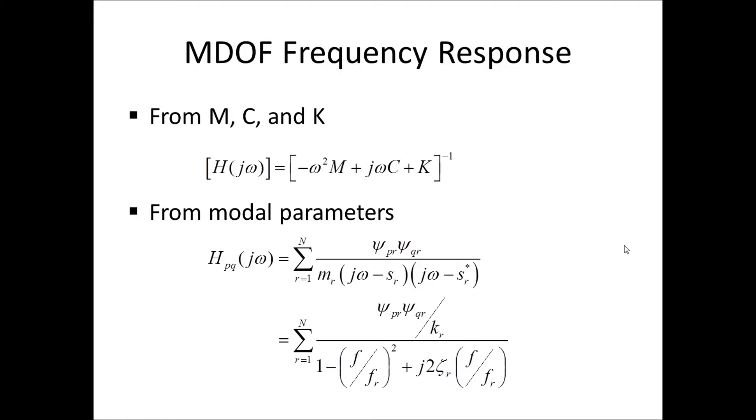To compute the MDOF frequency response matrix, we can either do it from knowing m, c, and k, or from the modal parameters. And if we do it from the m, c, k, then we simply compute minus omega squared times the mass matrix plus j omega times the c matrix plus k, and then we take this entire matrix and invert it.